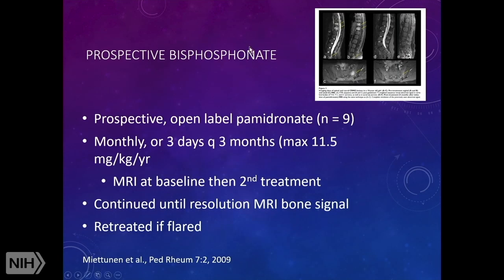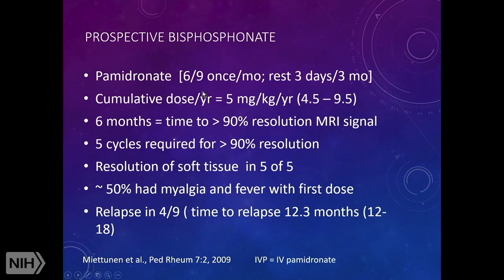There is a prospective open-label bisphosphonate study by Paivi Mäkitie, using either monthly infusions or three days in a row every three months, with MRI at baseline continued until resolution of bone signal. In nine patients, the time to greater than 90% MRI signal resolution was six months, requiring five cycles. All soft tissue inflammation resolved. Half had myalgia and fever as a side effect. About half relapsed, taking approximately one year to do so.